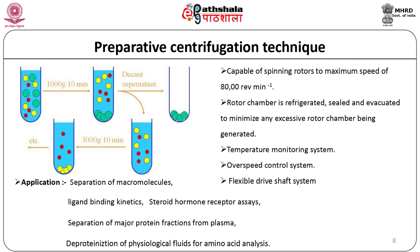Preparative centrifugation techniques are concerned with the actual separation, isolation, and purification of various components, and this is the most commonly used technique. A preparative centrifuge is capable of spinning rotors to a maximum speed of 80,000 RPM. The rotor chamber is refrigerated, sealed, and evacuated to minimize excessive pressure. A sophisticated temperature monitoring system and overspeed control system are provided. Flexible drive shafts are included to avoid imbalance and vibrations due to uneven loading of samples.